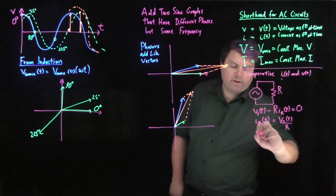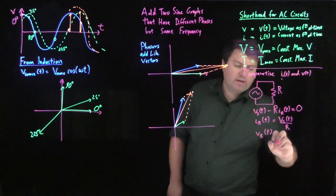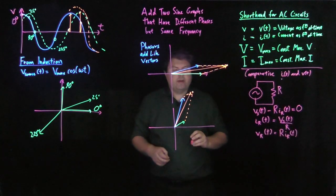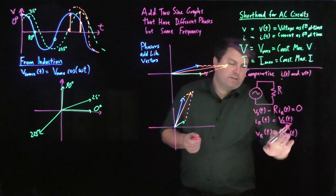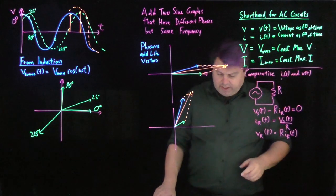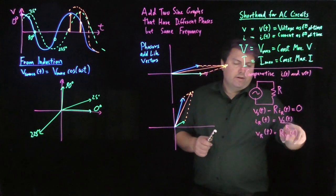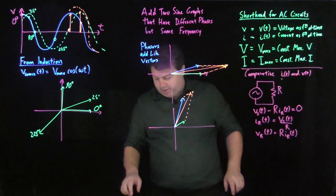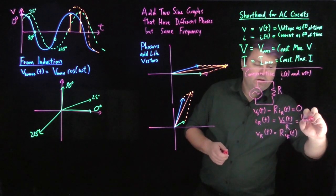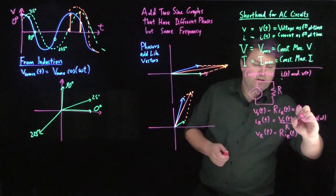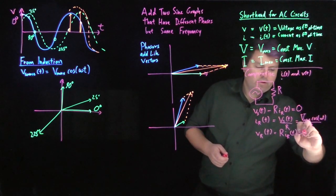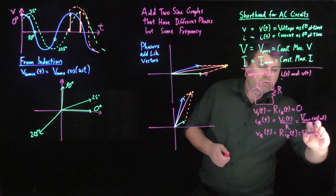So we have I sub R as a function of time is equal to V of our source as a function of time over R, or that we can say that our voltage of our resistor as a function of time is equal to R times our current as a function of time. Normally we do IR, but since it's a function of time, we kind of do it after. So in this case then, we have that our voltage of our source is cosine omega t, so this is going to be Vmax cosine omega t over R.